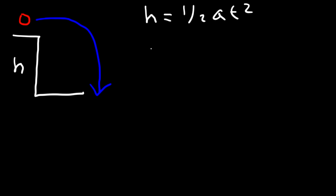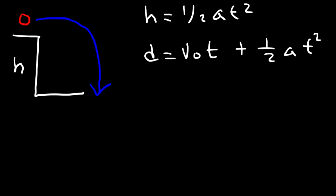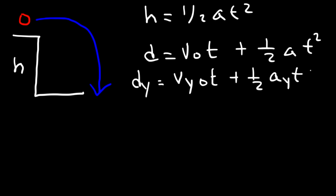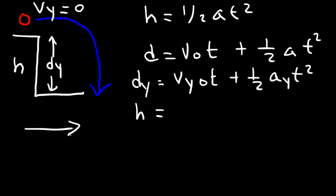This equation comes from D equals V_initial·t plus ½·a·t², applied in the y direction: dy equals V_y_initial·t plus ½·a_y·t². The displacement in the y direction is the height H. Since at the top the vertical velocity V_y is always zero — the object is moving horizontally and the initial speed is V_x, not V_y — we get H equals ½·a·t².